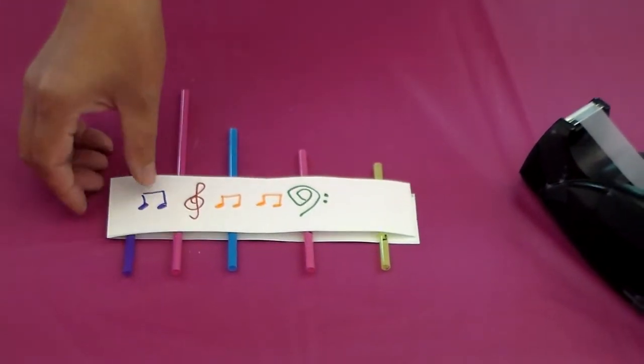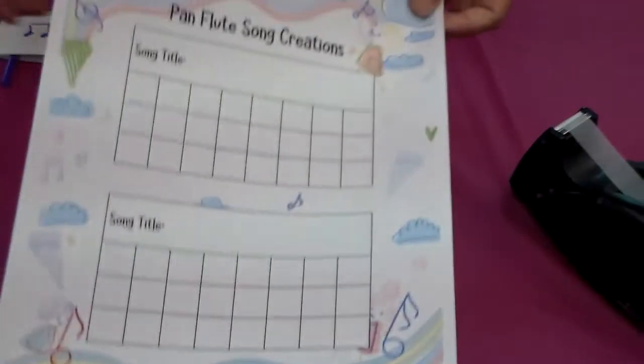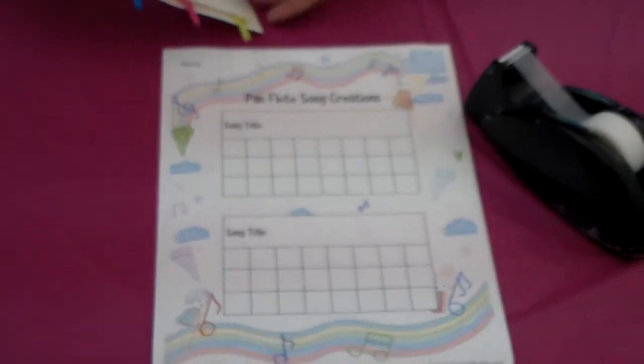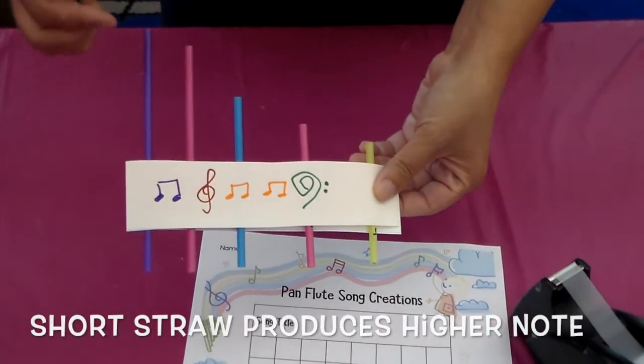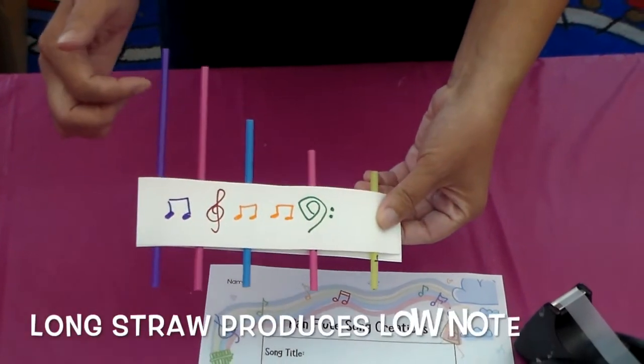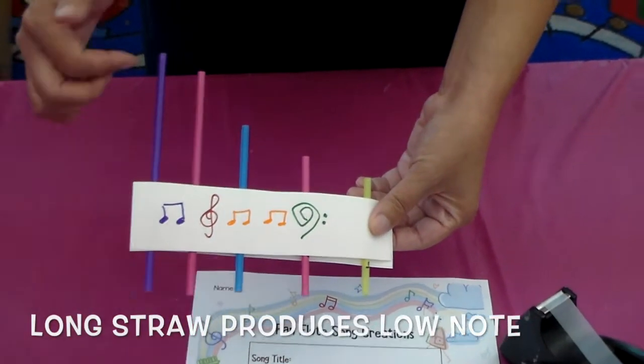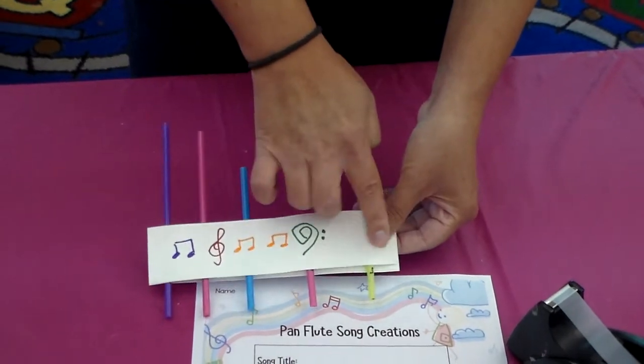Okay so this is what I meant with the worksheet here. So if you, the higher note is the shortest straw and then the lower note will have the longest straw. So correspond with one, two, three, four, five.